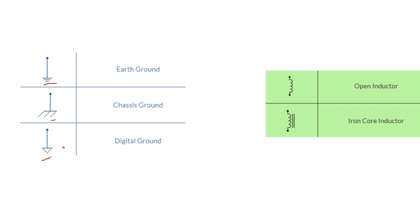So there are three types of ground: earth ground, chassis ground, and digital ground. The digital ground is found in the computer motherboard or smartphone motherboard — we find it with integrated circuits (ICs) or with MOSFETs, etc.